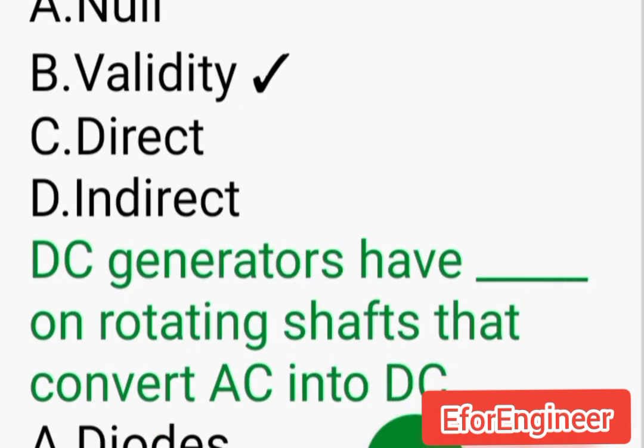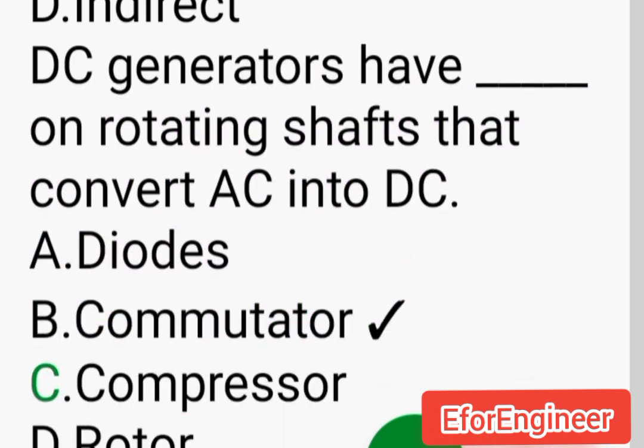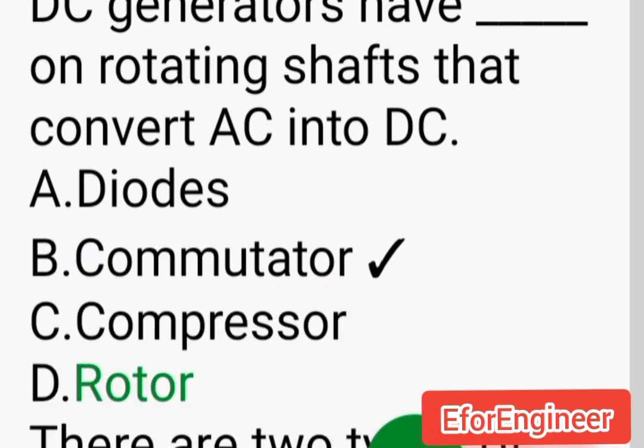DC generators have ___ on rotating shafts that convert AC into DC: A. Diodes, B. Commutators, C. Compressors, D. Rotors.